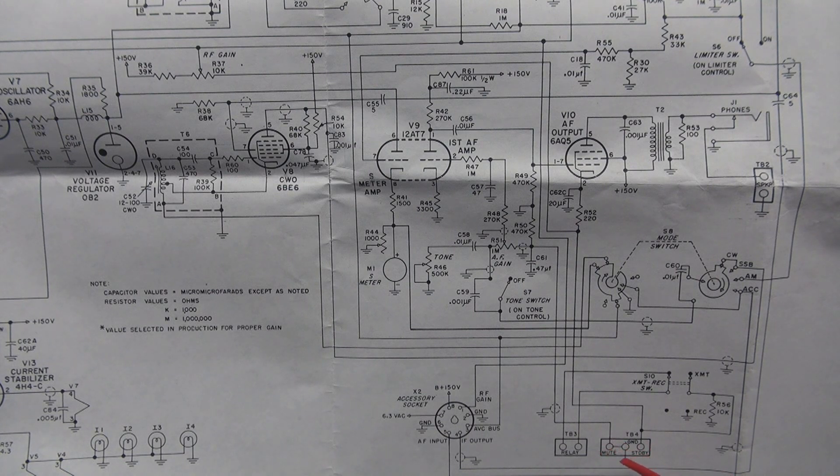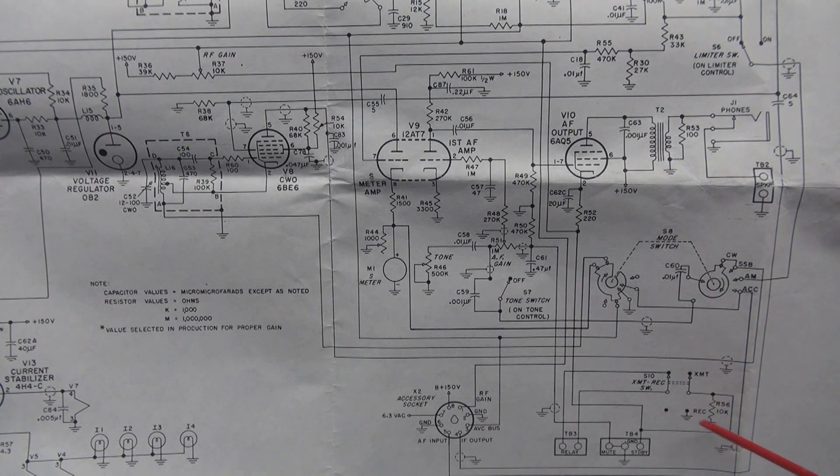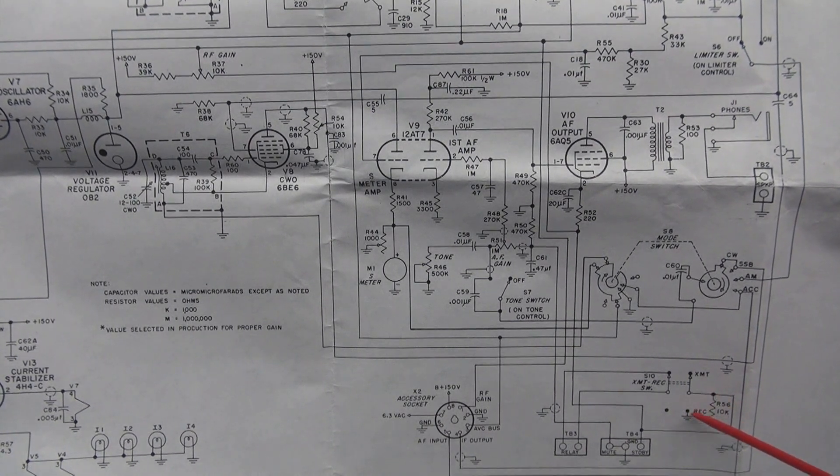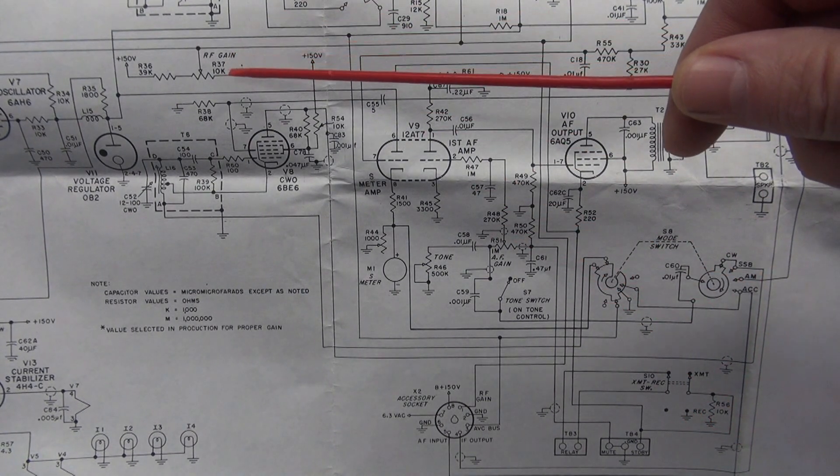Mute side is not being used at this point. The jumper is installed. If you follow standby up, you'll see it goes through that transmit receive switch on the front panel, and there's this 10k resistor. So when you go into standby, this 10k resistor actually goes in series with the RF gain control.